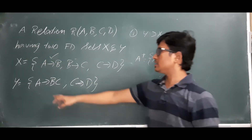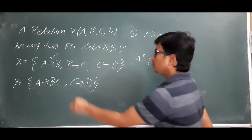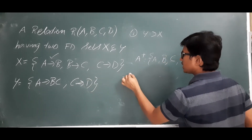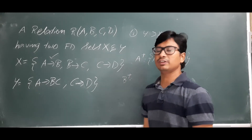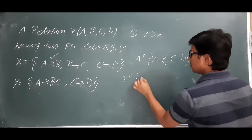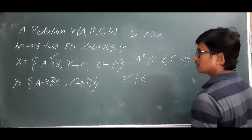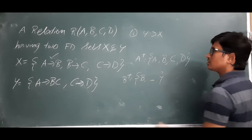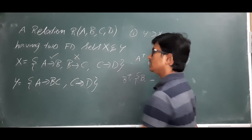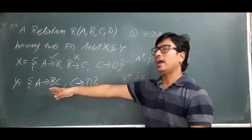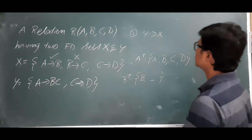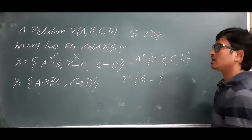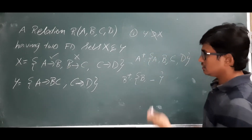Now we check whether B→C is present in Y. It is not directly present, so we calculate B+ from the FDs in Y. B+ consists of only b — it does not contain c. So B→C is not present directly or indirectly in Y.